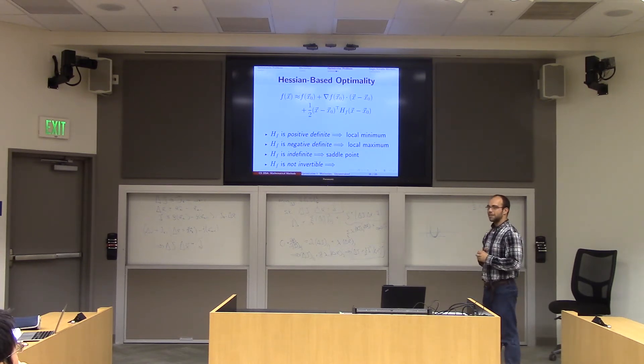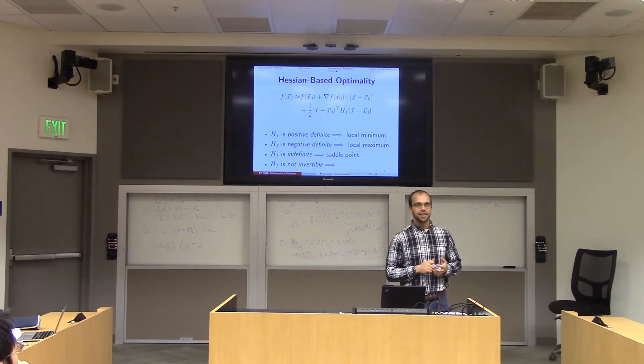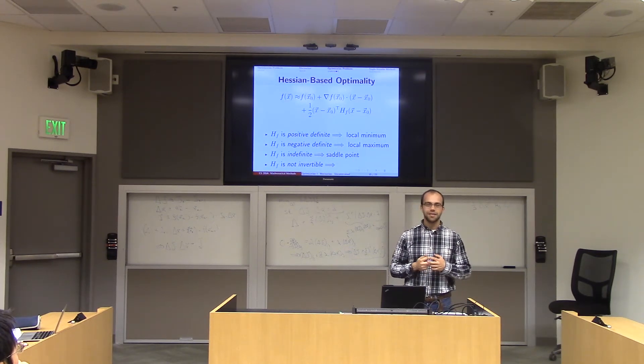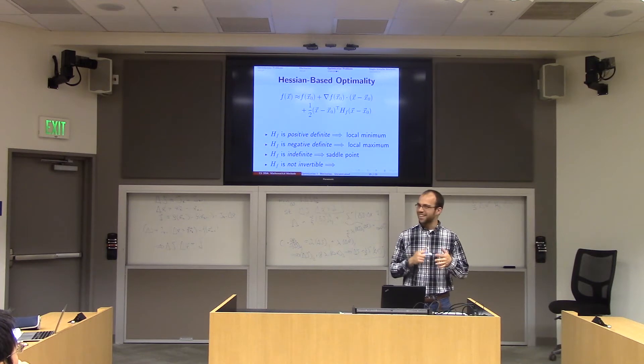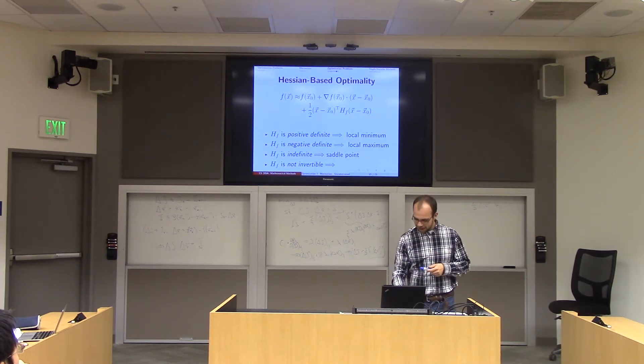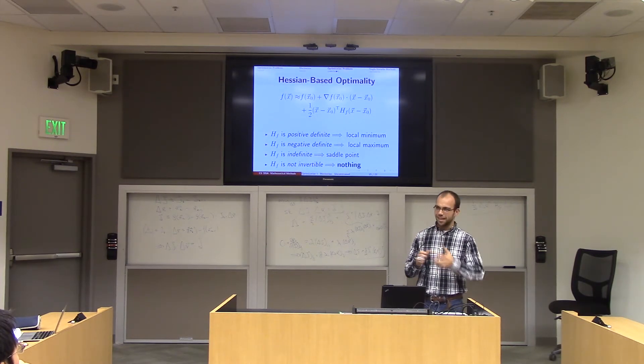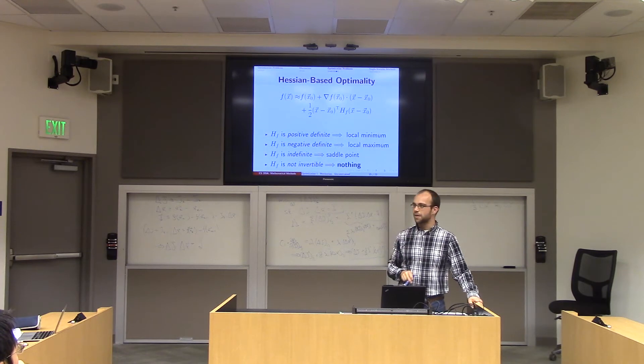And finally, if h sub f is not invertible, then you're hosed. But in general, it is very uncommon to find a function who up to second order is indefinite. So usually what happens when I use state-of-the-art optimization tools and I put in something with a non-invertible Hessian, it just gives up. Obviously, you can keep computing terms in this Taylor series, but I've kind of had enough already.